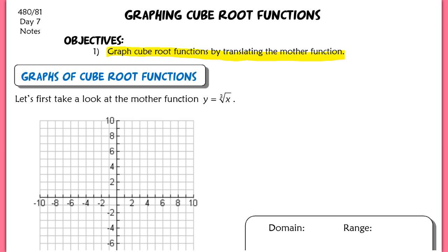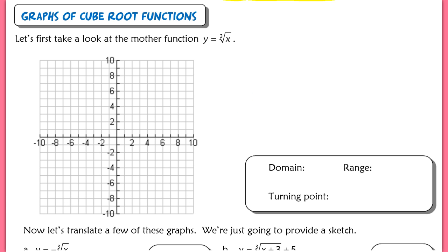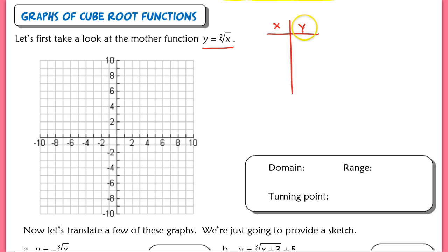We're going to start first with our basic mother function, the cube root of x. Let's try to figure out what the graph of our mother function looks like — we're graphing y equals the cube root of x. We're going to start with just a table of values, because whenever we don't know what a function looks like, we can always resort back to this table because that will give us actual points that we can plot on our graph.